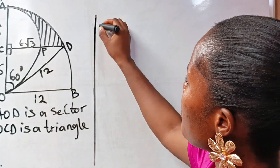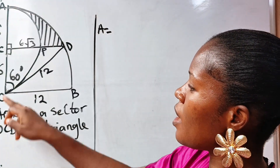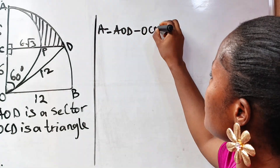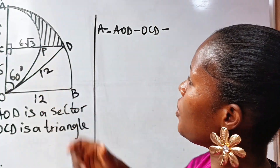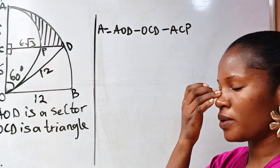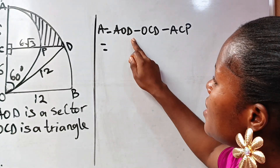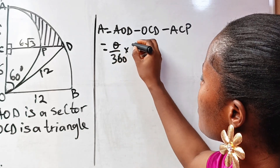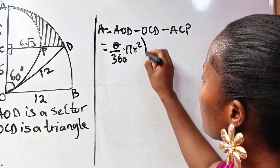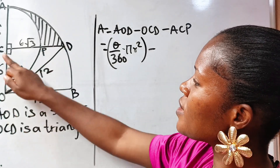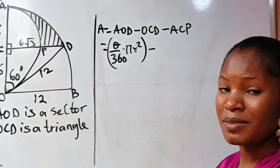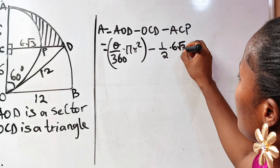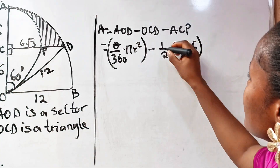Area A equals area of sector AOD minus area of triangle OCD minus area of quadrant ACP. The area of sector AOD is theta over 360 times π r². The area of triangle OCD is half times base times height, so half times 6√3 times 6. That is it for OCD.